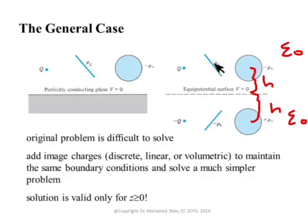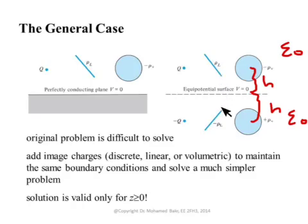If you have a linear charge ρ_L coulombs per meter, then the image is a linear charge of minus ρ_L coulombs per meter. You can see the image of the orientation: if this one is a positive charge, it is mapped to a negative charge at the same distance, and this negative charge is the image of the positive one.